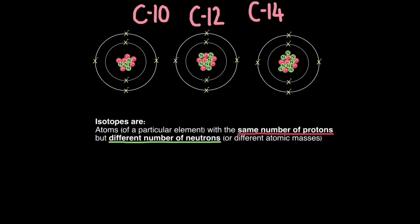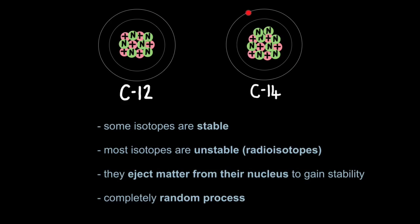So the textbook definition of an isotope would be: isotopes are atoms of a particular element with the same number of protons but different number of neutrons. So you can see I've got two isotopes of carbon here. I've got carbon 12 and carbon 14. Like all isotopes they have the same atomic number, the same number of protons, that's six. That's why they're carbon atoms.